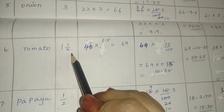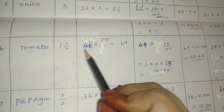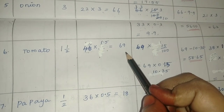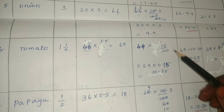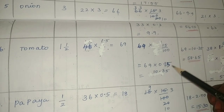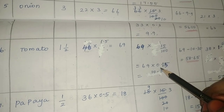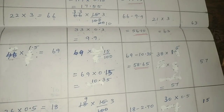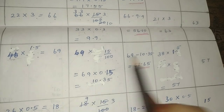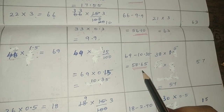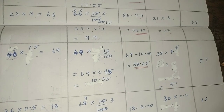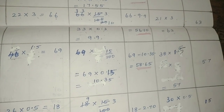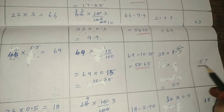Next item is tomato — 1.5 kg. Price per kg is ₹69. With 15% offer: 69 into 0.15 is 10.35. So 69 minus 10.35 is ₹58.65 — this is shop 1. Shop 2 tomato rate is ₹38 per kg, so 38 into 1.5 gives ₹57.